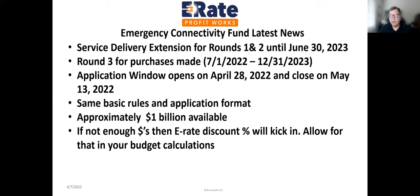Make sure your applications are completed in a timely fashion. This is a first-in, first-out process. The longer you wait to file, the less likely you'll see a funding commitment decision in the near term. The same basic rules and application format remain, essentially identical other than timing. Approximately one billion dollars is available. Importantly, if there are not enough dollars, the E-Rate discount percentages will kick in, so allow for that in your budget calculations.